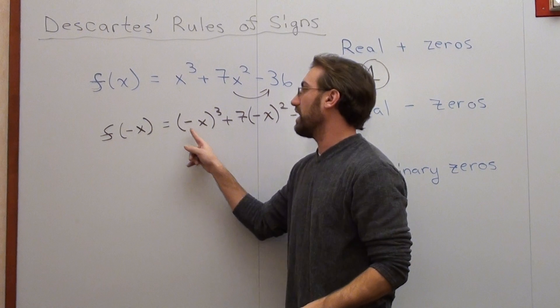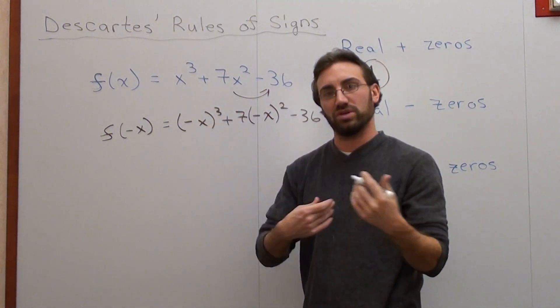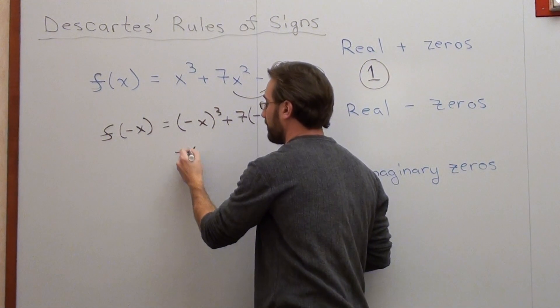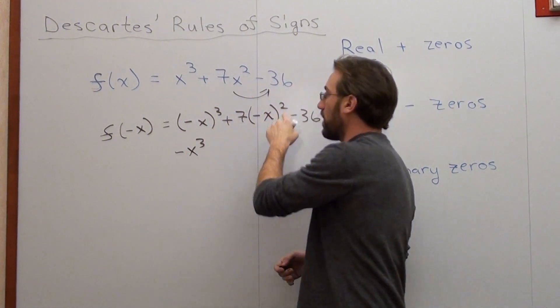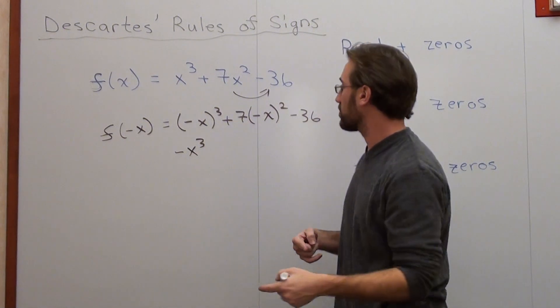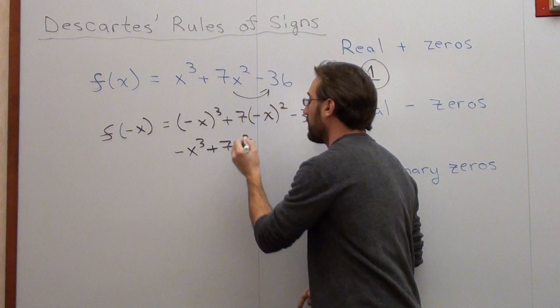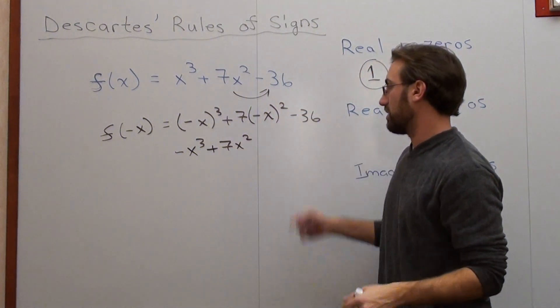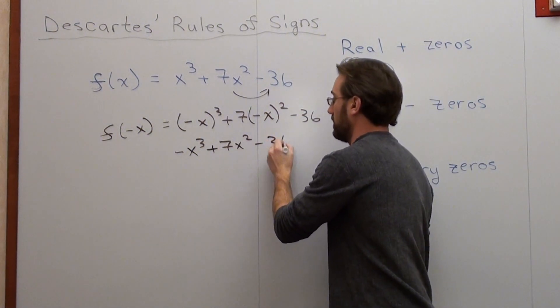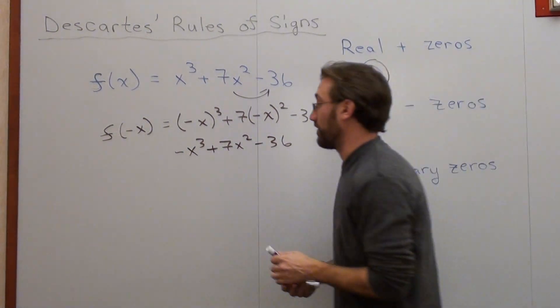This is interesting. Negative x times negative x times negative x, or negative x three times, is -x³. Negative x squared is negative x times negative x, which is positive x², times seven, which is +7x². Then it's subtracted by 36. I'm going to put my f(-x) there, but I need a different marker to do so.